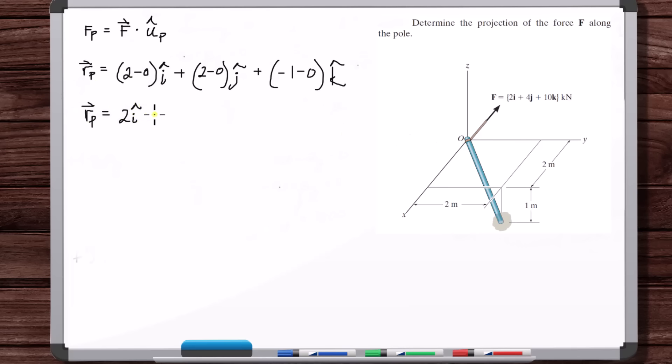So 2i hat plus 2j hat minus k hat. That's the position vector from O to the end of the pole.